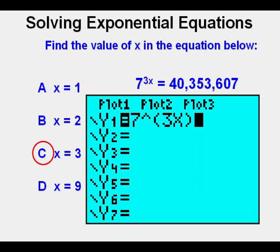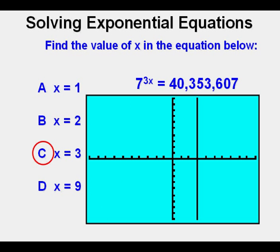Another great calculator way is to solve by graphing. So we go to y equals again and enter 7 to the power of 3x. Then to have one side of the equation set to 0, we subtract 40,353,607. Then we graph by pressing zoom 6 or graph. We see the function crosses at x equals 3.